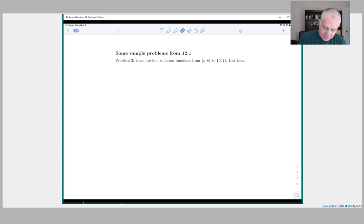Remember that a function is a special kind of relation. So a relation on the subsets AB cross 01 is just any subset of this Cartesian product.